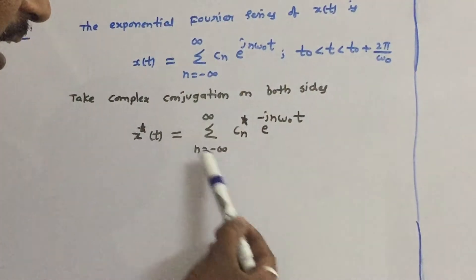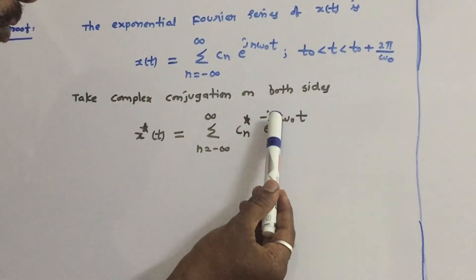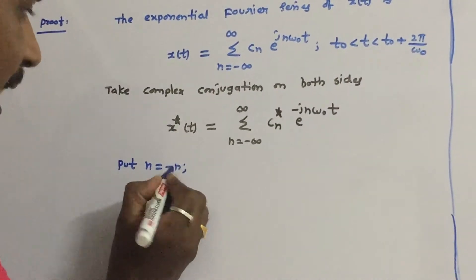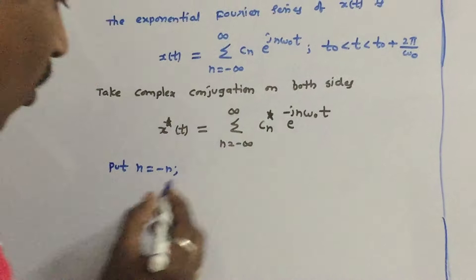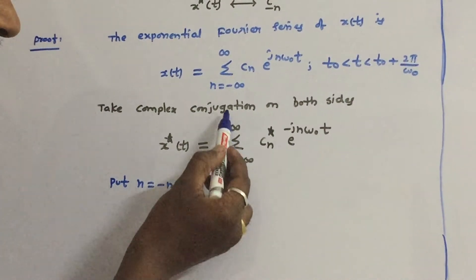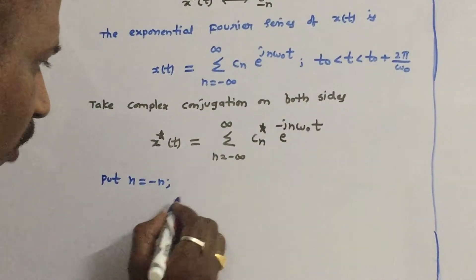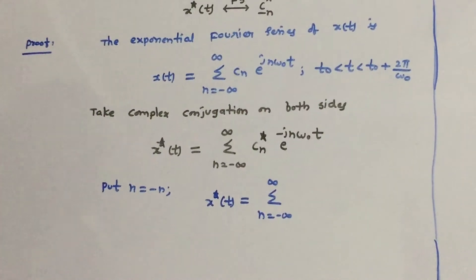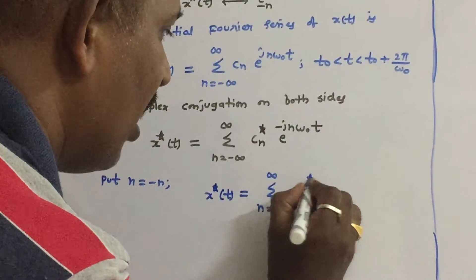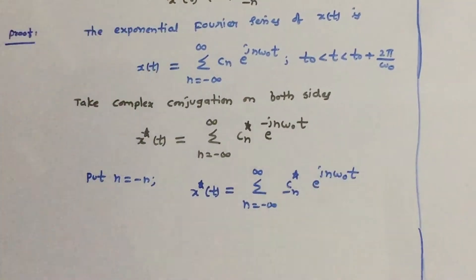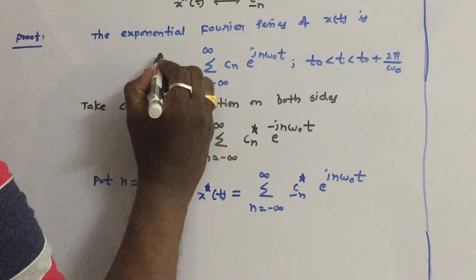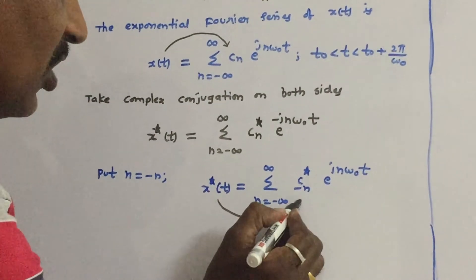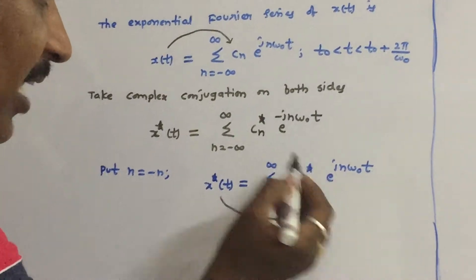This result is not yet in the standard form of the exponential Fourier series definition because of the negative exponent. To convert it, we substitute n equals minus n in the summation. When we interchange the limits from plus infinity to minus infinity back to minus infinity to plus infinity, the summation answer does not change. So x star of t equals summation from minus infinity to infinity of c minus n star times e to the power jn omega-naught t.